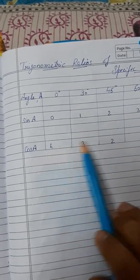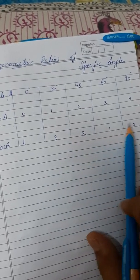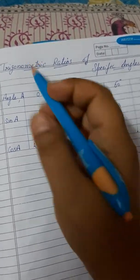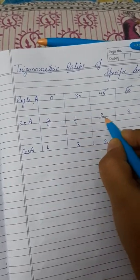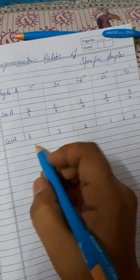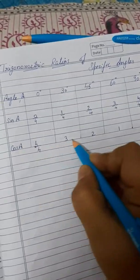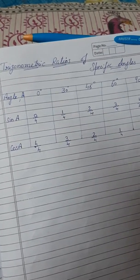And for cosine we will write in reverse order: 4, 3, 2, 1 and 0. After that what we have to do? We have to divide this by 4. All numbers divided by 4.